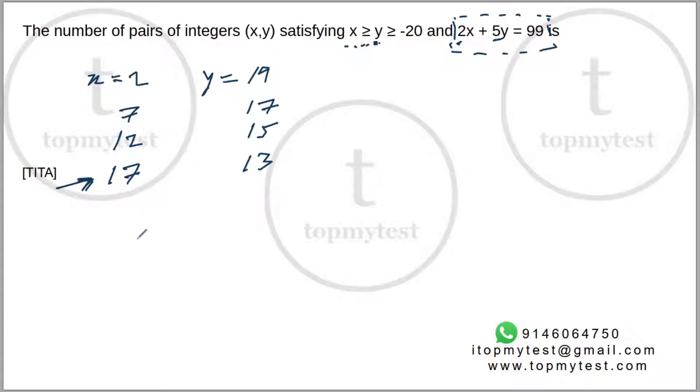Now from here on, if I keep on increasing x, x will satisfy the criteria that is more than minus 20. But beyond a point, y will become lower. It will be lesser than minus 20. So till where can I go?